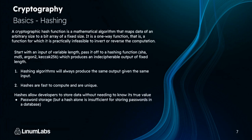A cryptographic hash function is a mathematical algorithm that maps data of an arbitrary size to a bit array of fixed size. It is a one-way function, meaning it is practically infeasible to invert or reverse the computation. Some notable hashing functions are SHA, MD5, Argon2, and Keccak256. The number at the end is the size of the bit array — so SHA256 yields 256 bits regardless of input size. Hashing algorithms always produce the same output given the same input — they are fast to compute and unique.